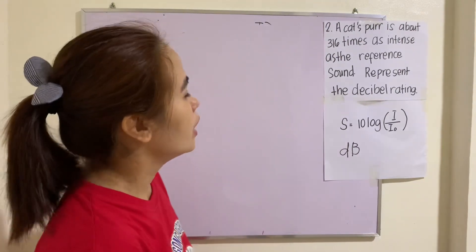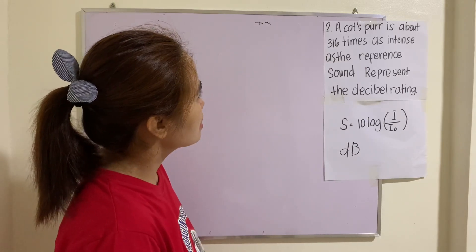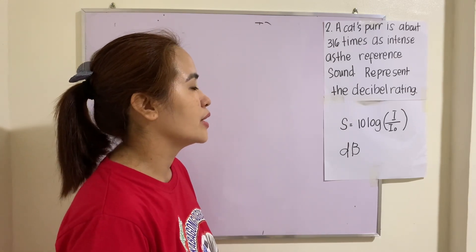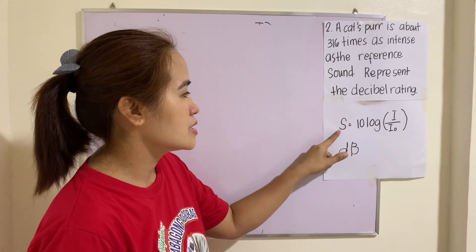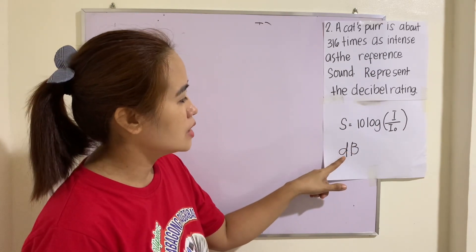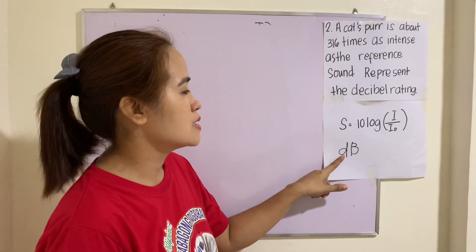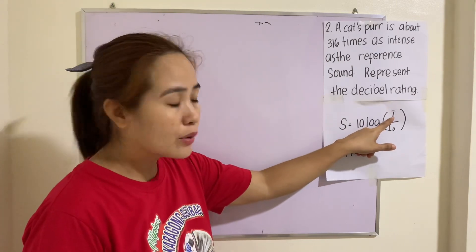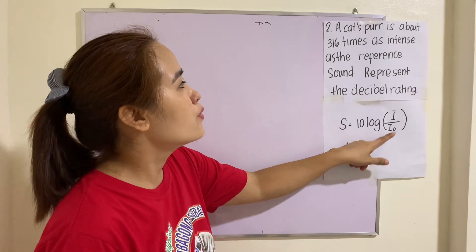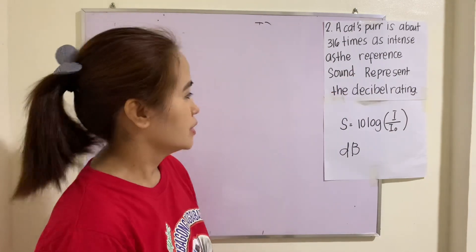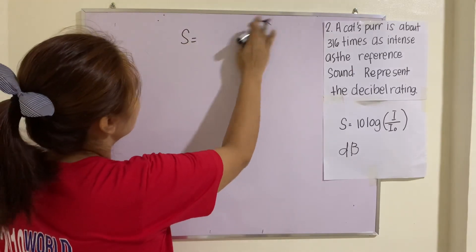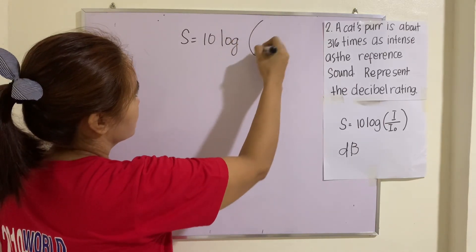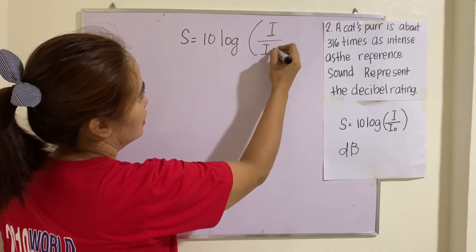Another application of logarithm is measuring the intensity or loudness of a sound. Let's take example number two. A cat's purr is about 316 times as intense as the reference sound. Represent the decibel rating. The decibel rating is S = 10 log(I/I_0), where I stands for the intensity of the sound. And this one is the intensity of the sound from a reference sound. So how are we going to represent it in decibel?